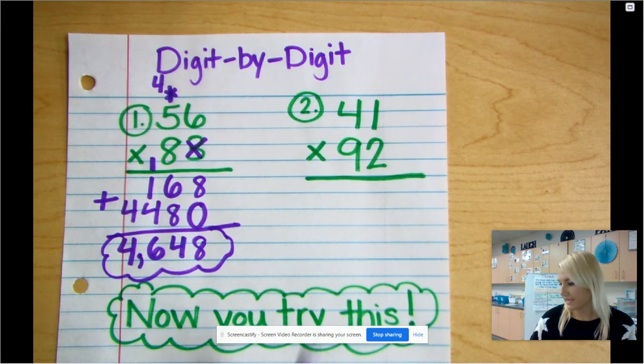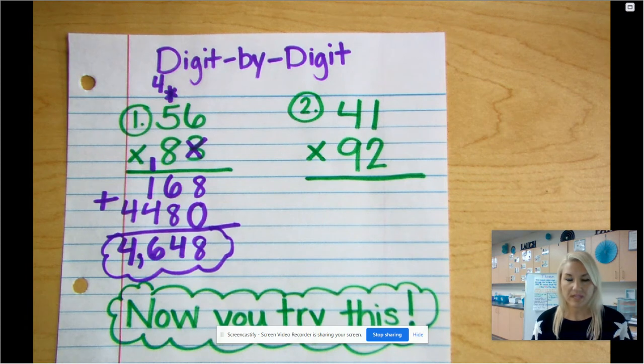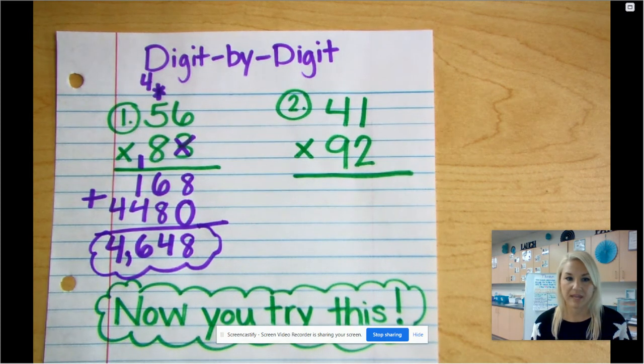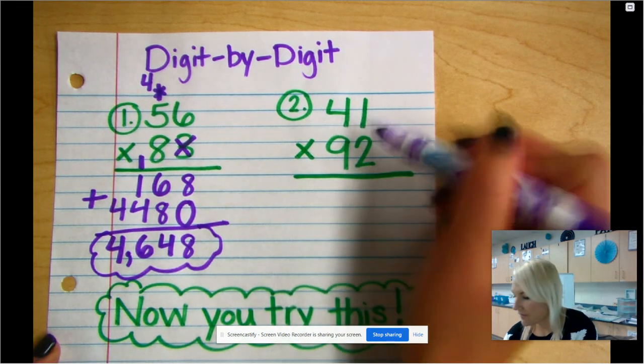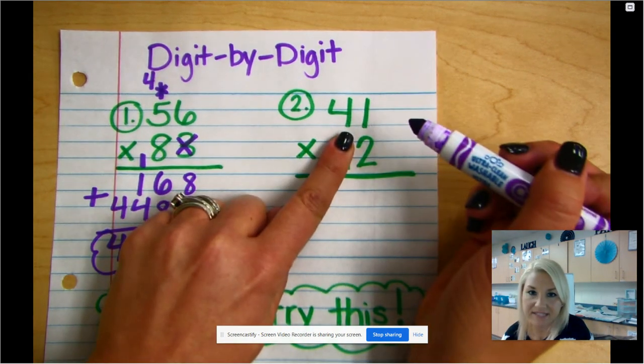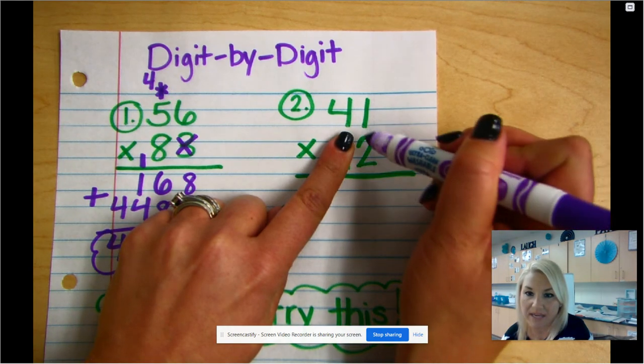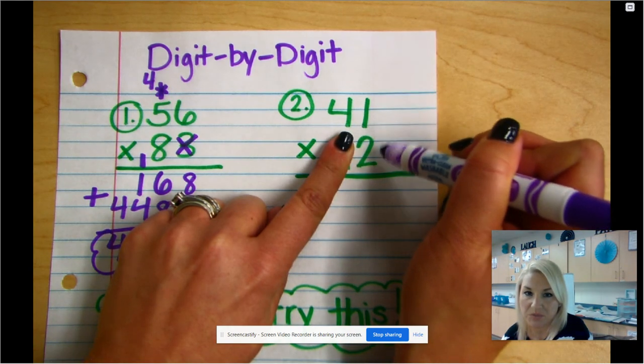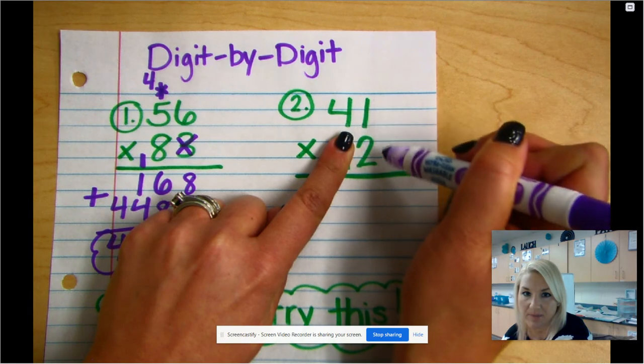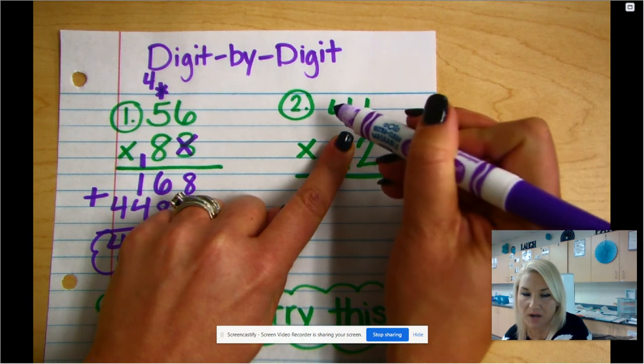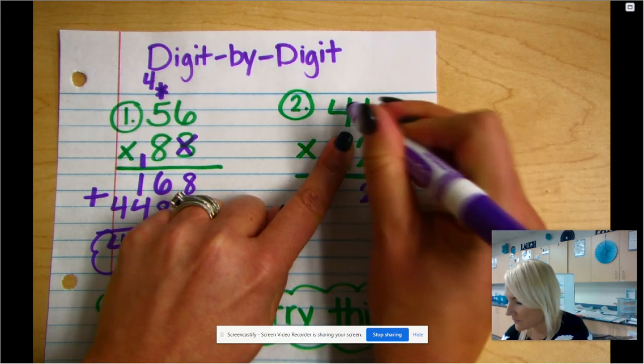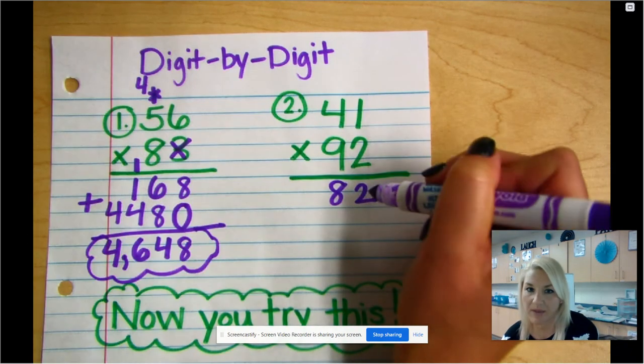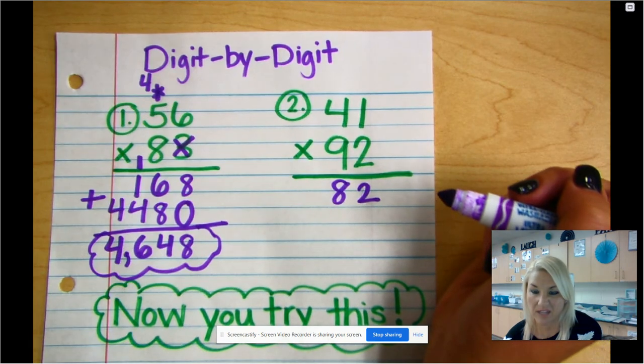And now I'm gonna move over on into number 2. And I'm gonna do the same thing here, and then I'm gonna have you try number 3. So I'm gonna start off, like I said, kind of pretending that this is not here at all. And I'm gonna go ahead and through the steps. I'm gonna multiply 2 times 1, start in the ones, and then I'm gonna multiply 2 times 4. So 2 times 1 is 2, and 2 times 4 is 8. That one was pretty easy because I didn't have to carry anything.